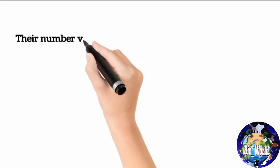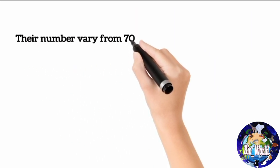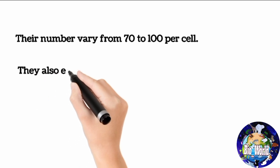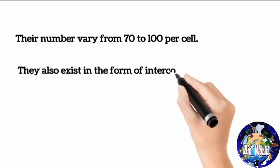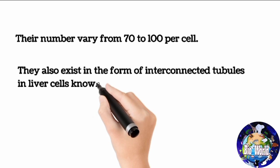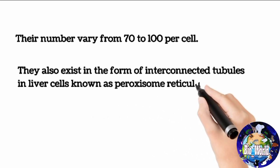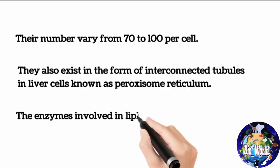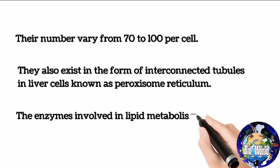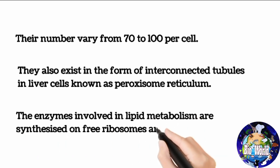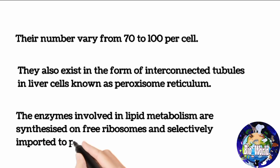Their number varies from 70 to 100 per cell. They also exist in the form of interconnected tubules in liver cells, known as the peroxisome reticulum. The enzymes involved in lipid metabolism are synthesized on free ribosomes and selectively imported to peroxisomes.